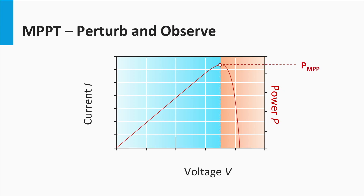We start first with the perturb and observe, or P&O, algorithm. In this algorithm, a perturbation is provided to the PV module or array voltage, which translates to an increase or decrease in power. If an increase in voltage leads to an increase in power, this means the operating point is to the left of the MPP, and hence further voltage perturbation is required towards the right to reach the MPP. Conversely, if the increase in voltage leads to a decrease in power, this means the current operating point is to the right of the MPP, and hence further perturbation is required towards the left.